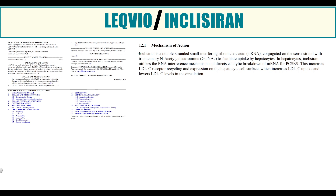Inclisiran, trade name Leqvio, is a double-stranded small-interfering ribonucleic acid, shortly siRNA. In hepatocytes, Inclisiran utilizes the RNA interference mechanism and directs catalytic breakdown of messenger RNA for PCSK9. This increases low-density lipoprotein receptor recycling and its expression on the hepatocyte cell surface, which increases LDL cholesterol uptake and lowers LDL cholesterol levels in circulation.